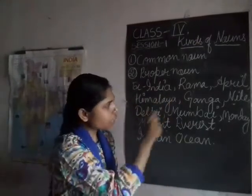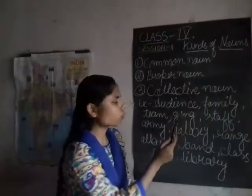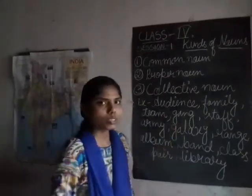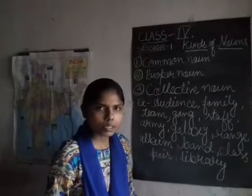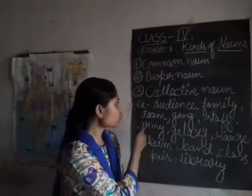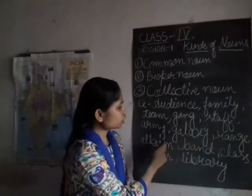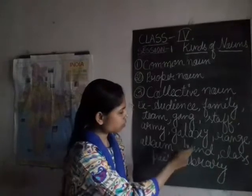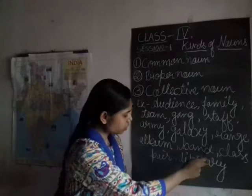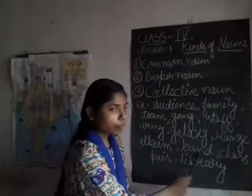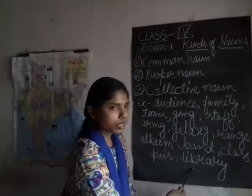Collective noun refers to the group of people, animals or things. Examples I have written over here: audience, family, team, gang, staff, army, galaxy, range, album, band, class, pair, library.